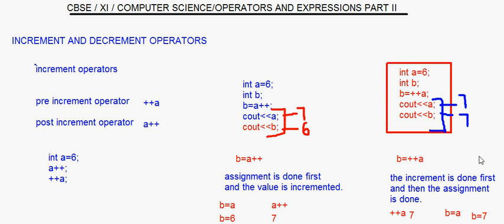So this is the basic difference between a pre-increment and a post-increment: wherever you have a pre-increment, that is the first thing to be done. Whereas if you have a post-increment, that will be done only after the assignment operator or any other operator — it will be done last.